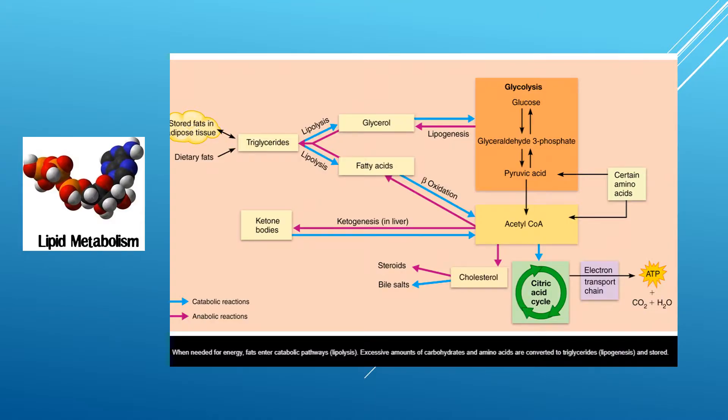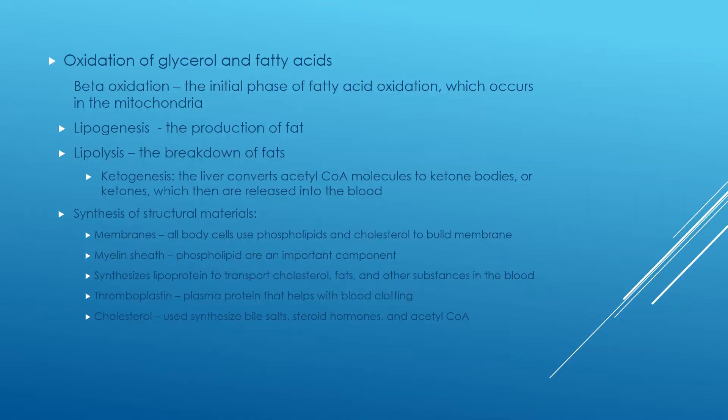Next is lipid metabolism. Oxidation of glycerol and fatty acids: beta-oxidation is the initial phase of fatty acid oxidation, which occurs in the mitochondria. Lipogenesis is the production of fat, which occurs when cellular ATP and glucose levels are high. Lipolysis is the breakdown of fats. Ketogenesis is when the liver converts acetyl-CoA molecules to ketone bodies or ketones, which are then released into the blood.